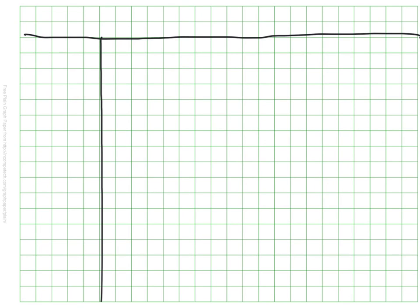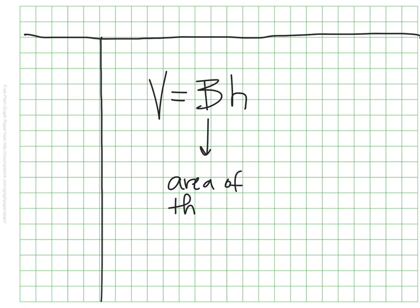So remember, the essential question of this video is how we calculate the volume — the space inside a 3D object. We use a simple algorithm: volume equals the big B, the entire area of the base, multiplied by the height. This strategy works for many 3D objects such as cylinders, rectangular prisms, and triangular prisms — a good approach that can be applied across many different shapes.